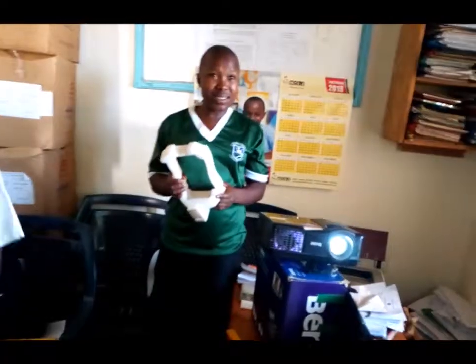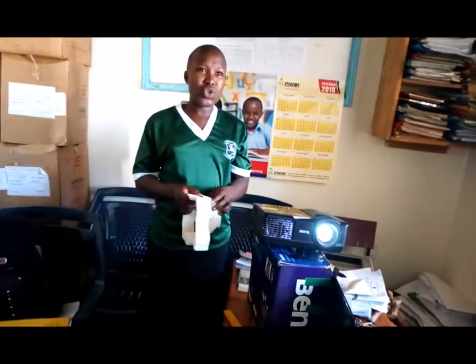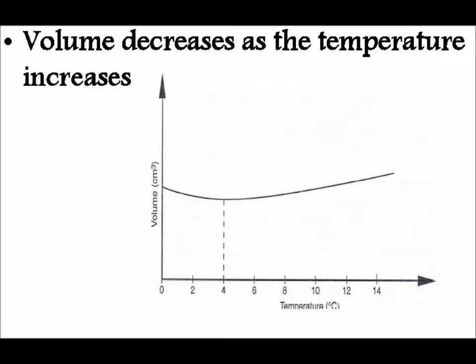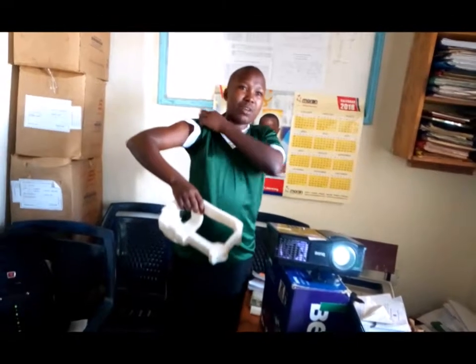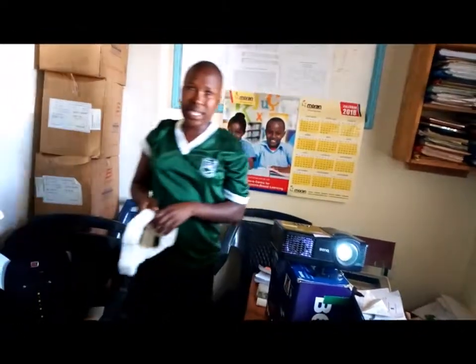The graph below shows variation of volume against temperature for anomalous expansion of water.